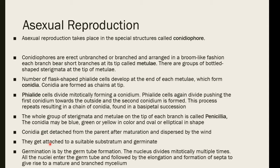Conidia get detached from the parent after maturation and are dispersed by the wind. When they land on a suitable substratum, they germinate by germ tube formation. The germ tube elongates and septa form, giving rise to a new mycelium.